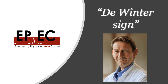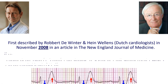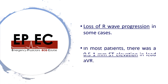The De Winter sign is a relatively new sign first reported by Robert De Winter and Hein Wellens in 2008 in the New England Journal of Medicine. It is described as a J-point ST depression followed by an upsloping ST segment, then a tall symmetrical T wave, reported in the precordial leads V1 to V6. The T wave looks so much like a hyperkalemia ECG change. They also reported loss of R wave progression and slight ST elevation in AVR in some cases.